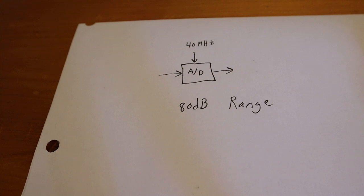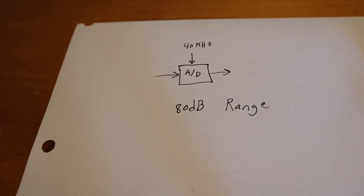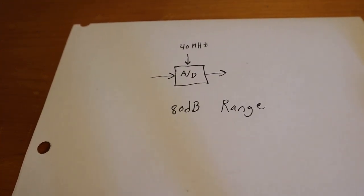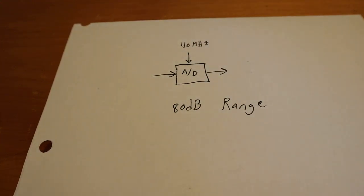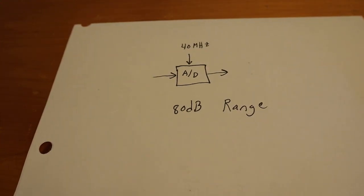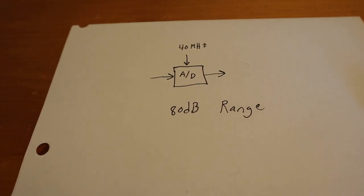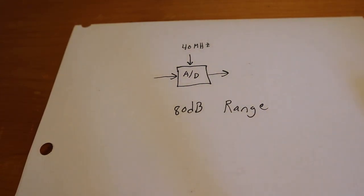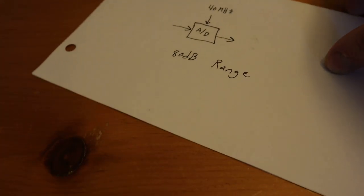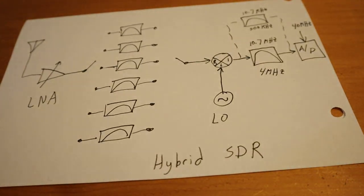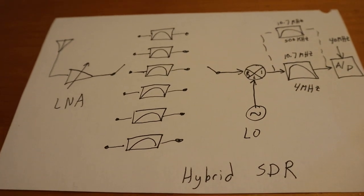But you see this other A to D, it works at 40 megahertz clock and it has a better 80 dB range as opposed to the other one that only had a 60 dB range. Does that mean that we can only see 0 to 20 megahertz with this guy? Not really. You can still use it, you just got to put some mixers in front of that bad boy.